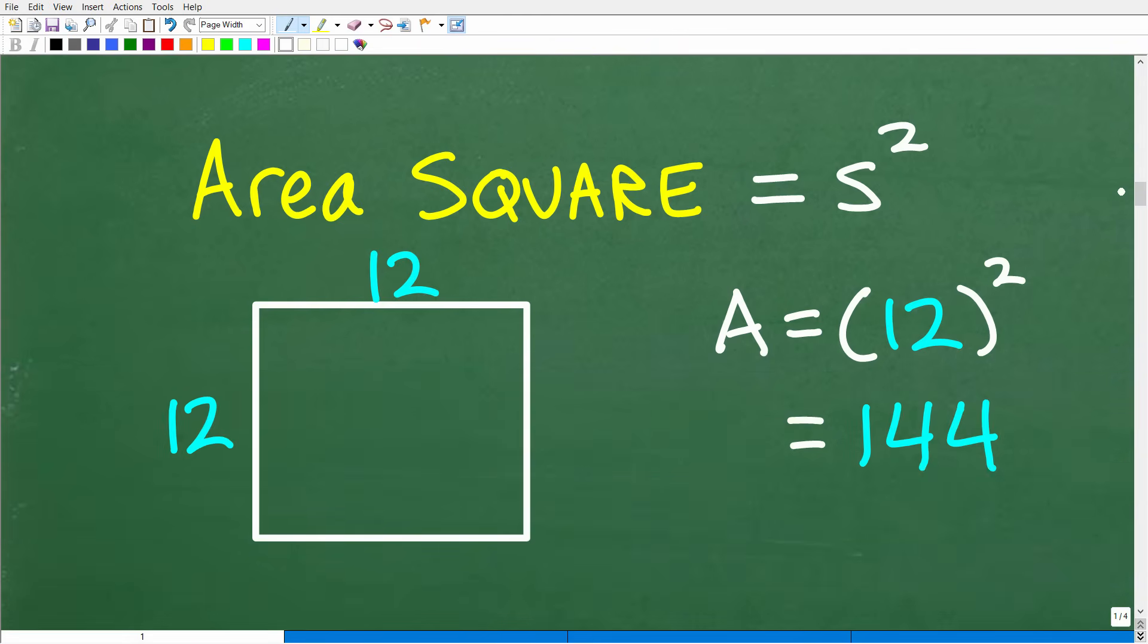To find the area of a square, very simple, all we're going to do is take the length times the width, but really we have side, side, side, because in a square all sides are equal. So the side times the side, or length times width, is going to be s times s, or s squared. So the area of this square is just going to be 12 times 12.